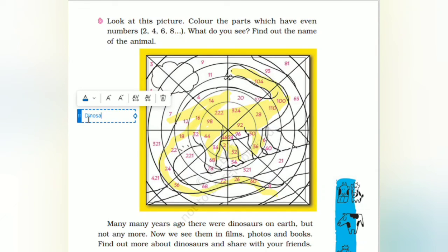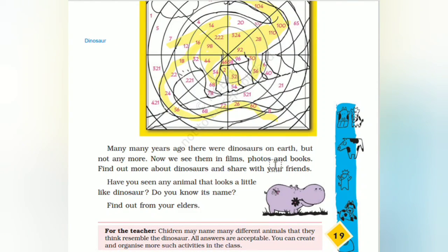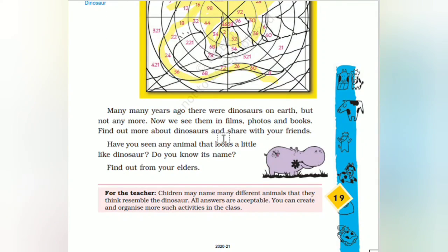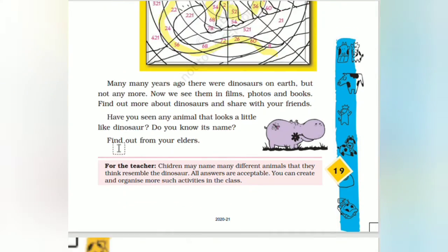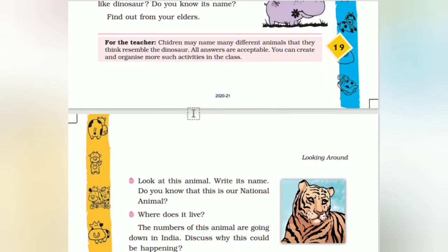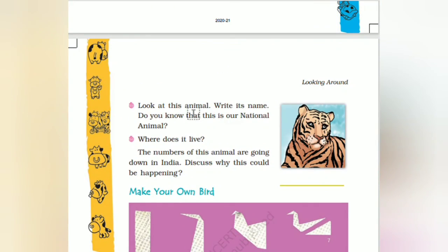That is the dinosaur. There were dinosaurs thousands of years before, but not anymore. Now we can see their fossils. Find out more about dinosaurs from films, photos, and books, and share with your friends. Do you know the name of any animal that looks like a dinosaur?